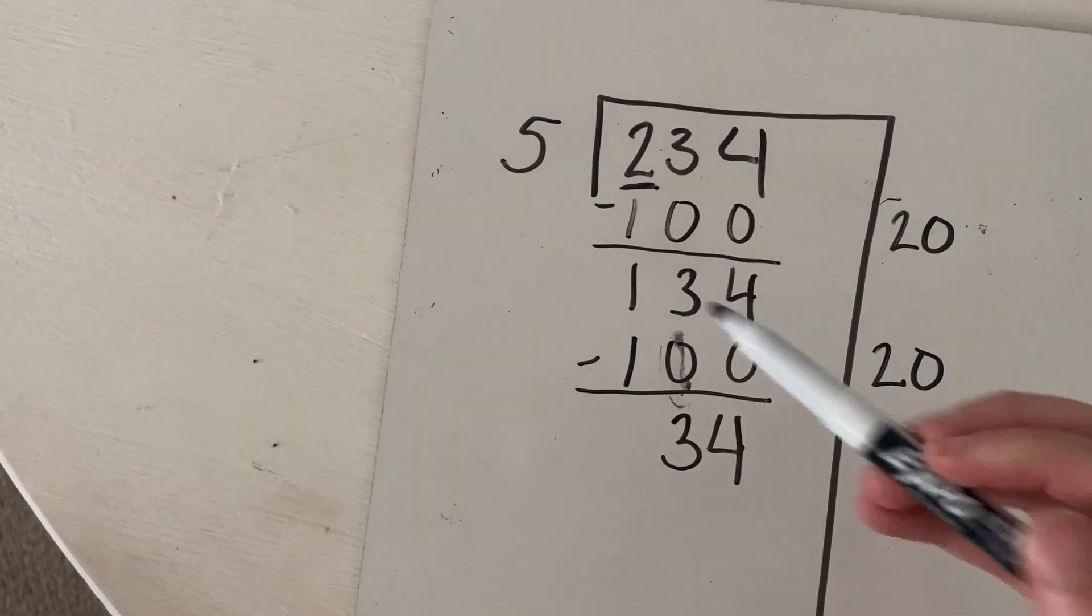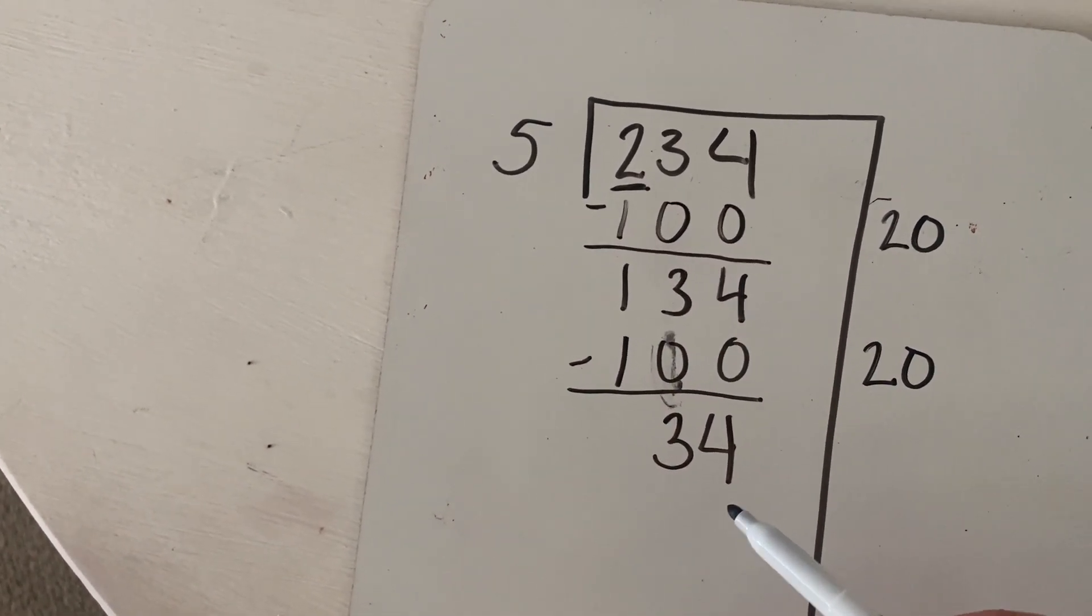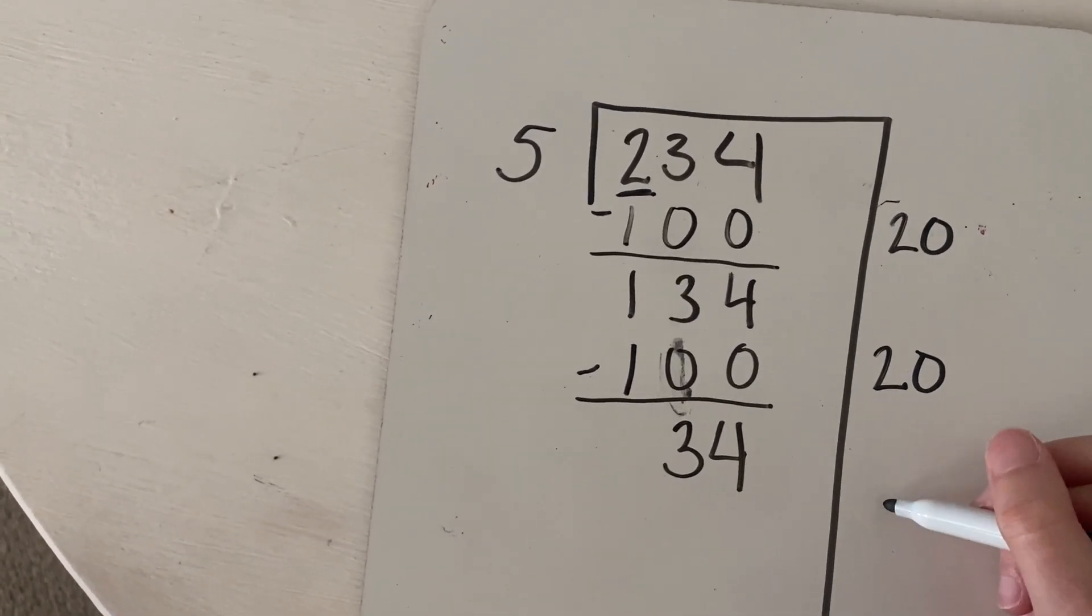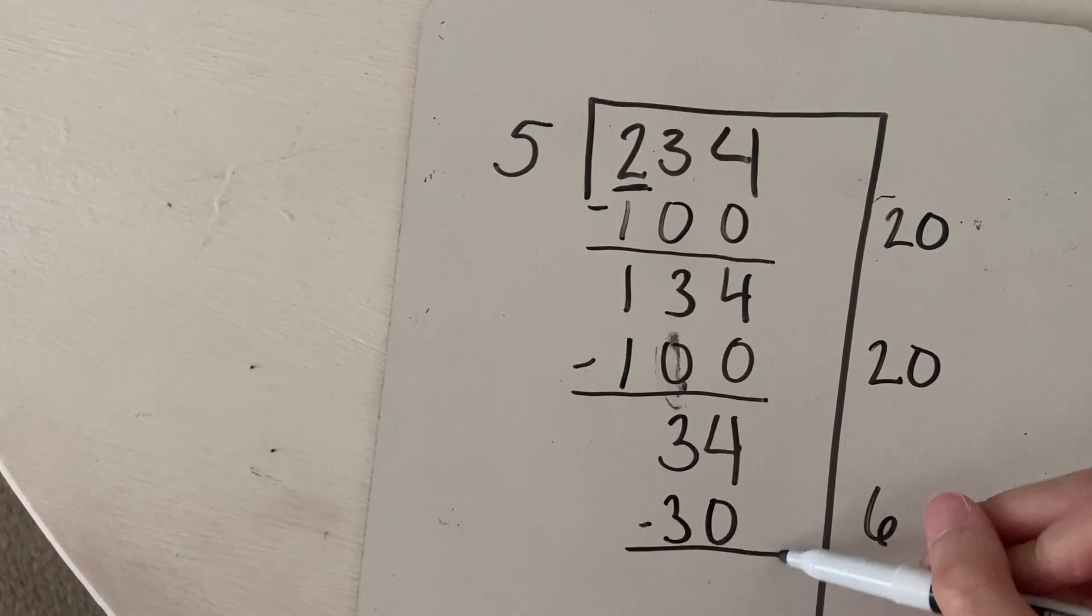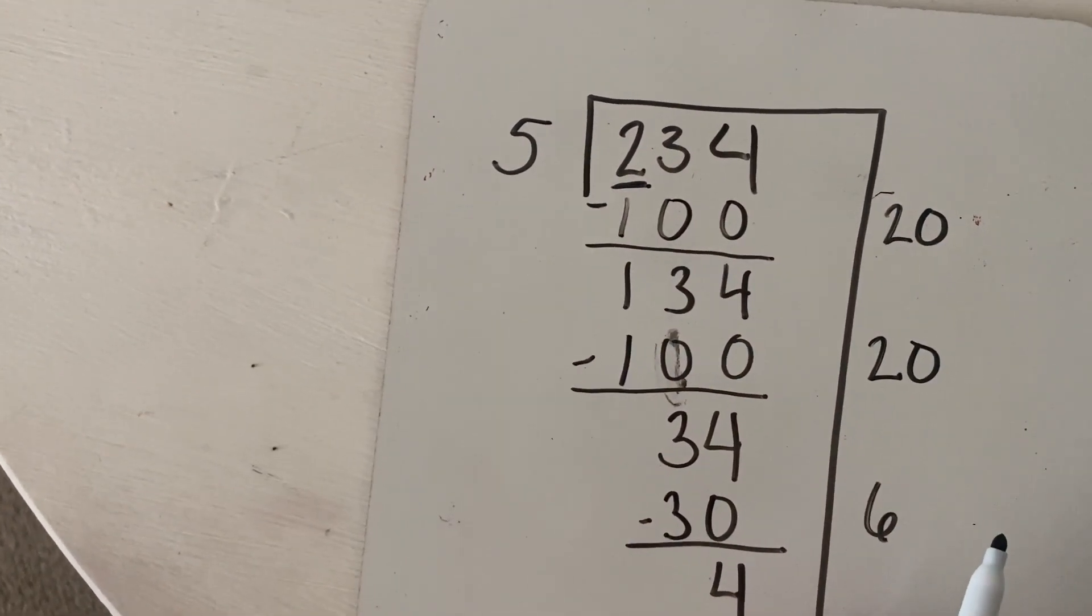So now we have 34 left. And then I can think, OK, how many times does five go into 34? Well, that's easier to skip count to. Five times seven would be 35, and that's just a little too big. So I'm going to do five times six, which would be 30. And I would have four left over and five does not fit into that. So that would be my remainder.